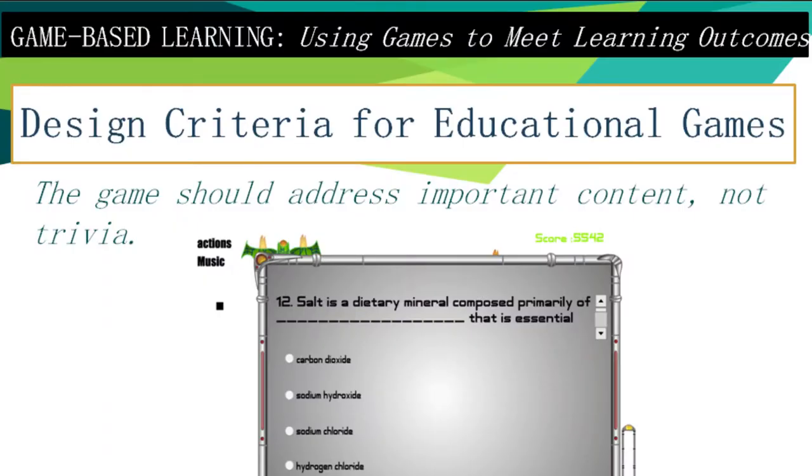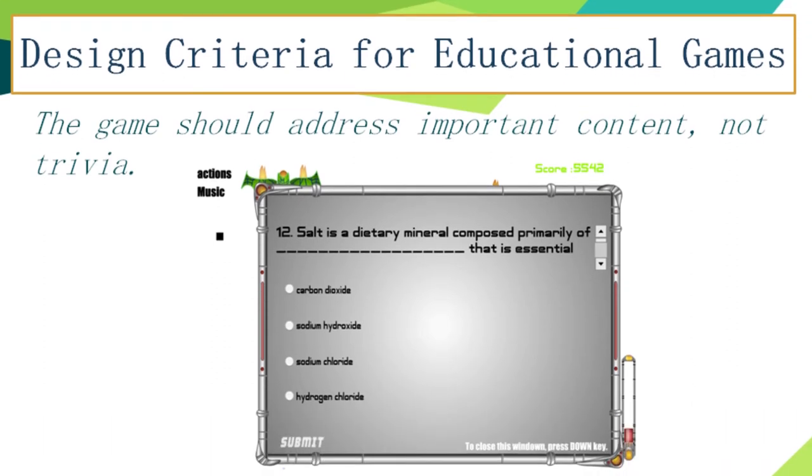The second criterion is that the game should address important content, not trivia. The questions should be based on the topic. For example, one multiple-choice question asks: 'Salt is a dietary mineral composed primarily of blank that is essential,' with options including carbon dioxide, sodium hydroxide, sodium chloride, and hydrogen chloride. Students must answer correctly to progress in the game, so it addresses an important part of the content.